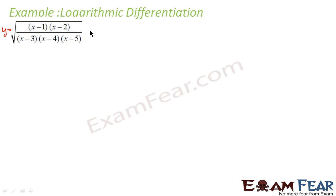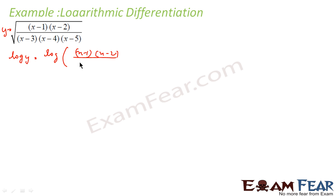What I can do is put log on both sides. So I get log y as log of the whole thing — that is (x minus 1)(x minus 2) divided by (x minus 3)(x minus 4)(x minus 5) — all raised to the power 1 by 2.